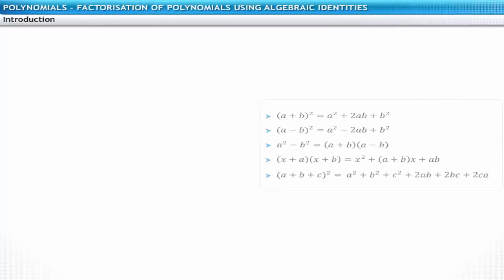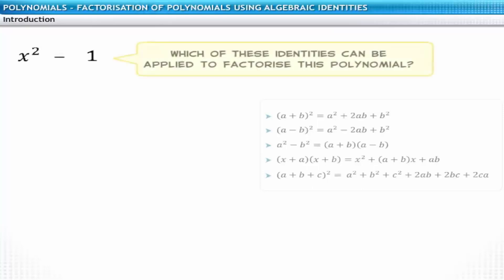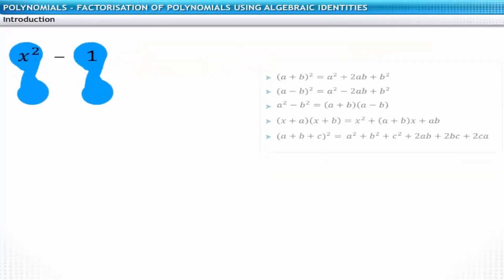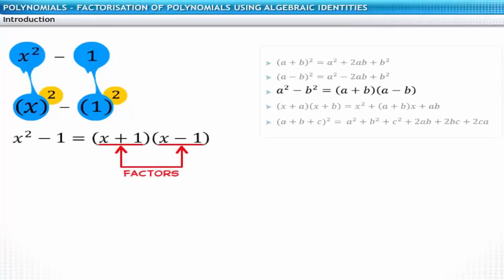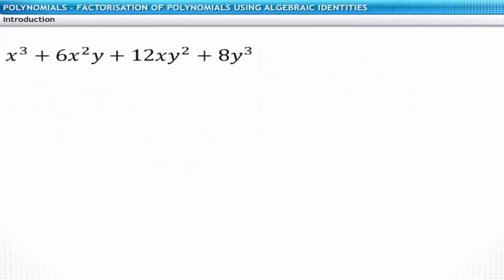For example, consider the quadratic polynomial x squared minus 1. This can be expressed as the difference of two squares, so you can use the corresponding identity to factorize it, obtaining linear polynomial factors. Now consider another polynomial whose highest degree is 3 — hence it is a cubic polynomial.